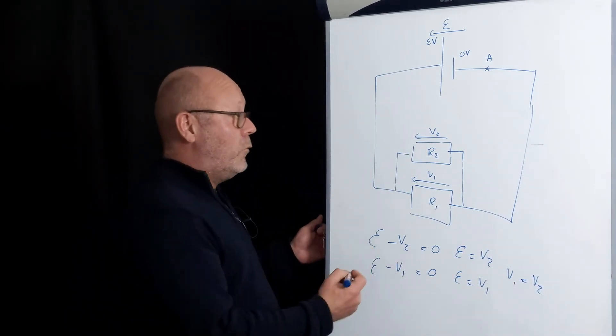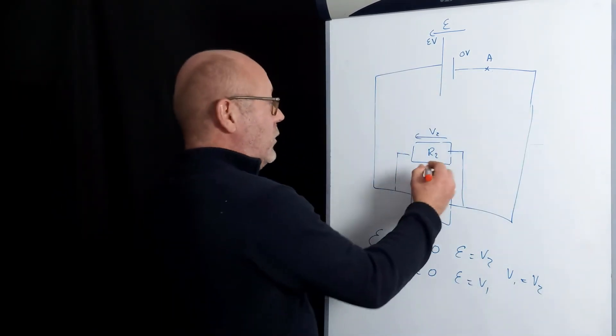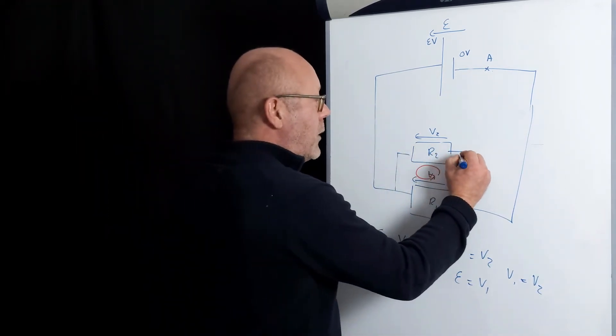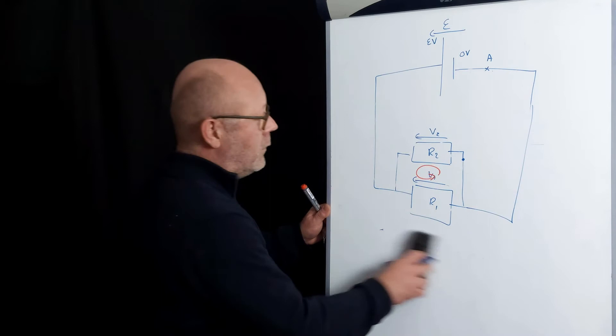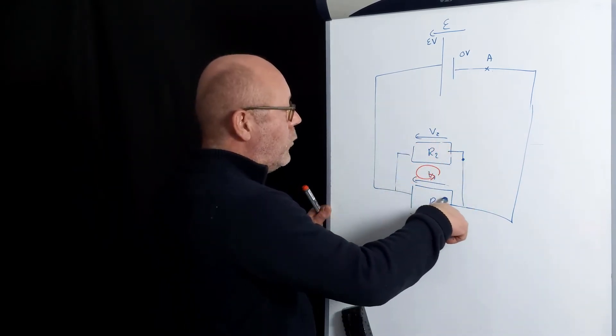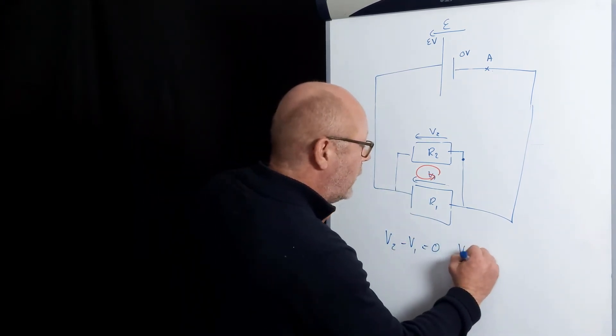We can use another loop. We could use this loop, for example. Let me change colour. Yeah, let's use this loop. We start from this point and we go around. V2 minus V1 equals zero. So V2 equals V1.